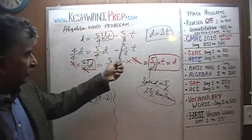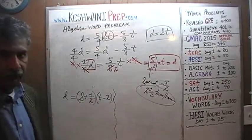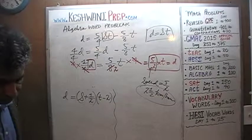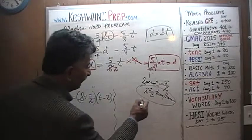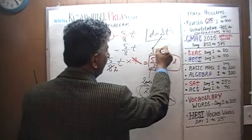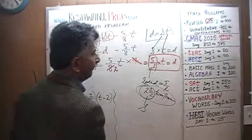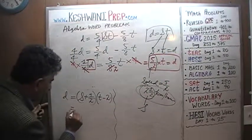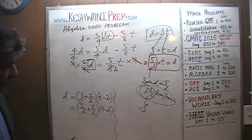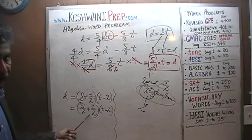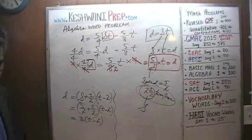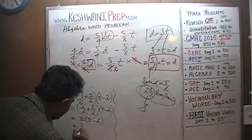All of this work gives us the speed: two and a half kilometers per hour. Now we'll put it into the first equation. So s equals two and a half — we substitute into the first equation: two and a half plus one-half, times t minus two, equals d. Two and a half plus one-half is three. So it's 3 times t minus 2, which is the same as 3t minus 6.